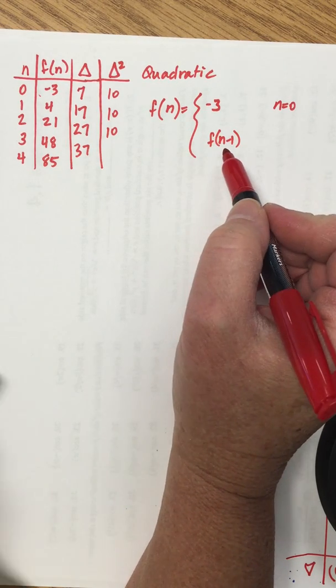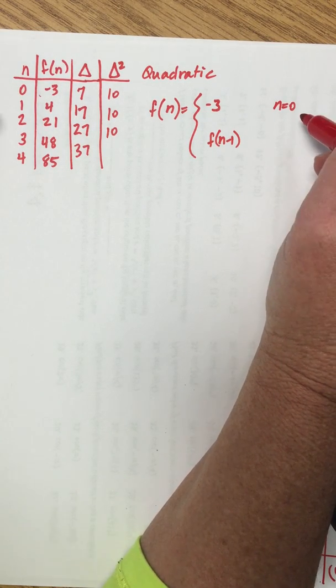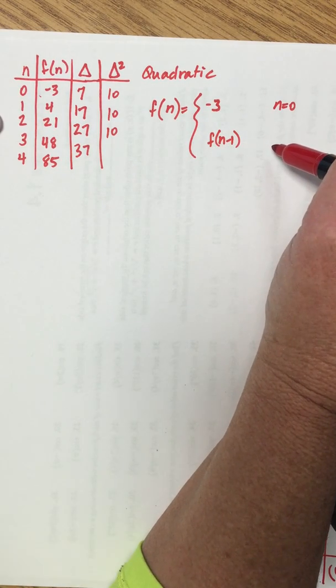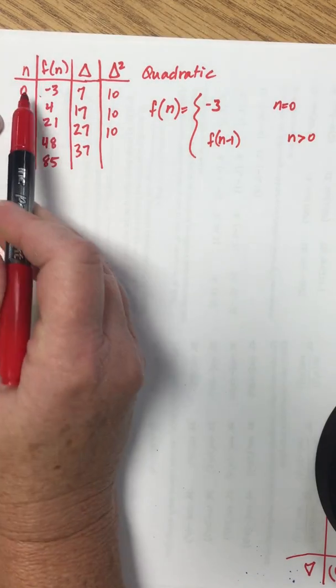So let's figure out what that linear part is. And this formula that we come up with right here is going to work for every n that's greater than 0, or whatever your first input is.